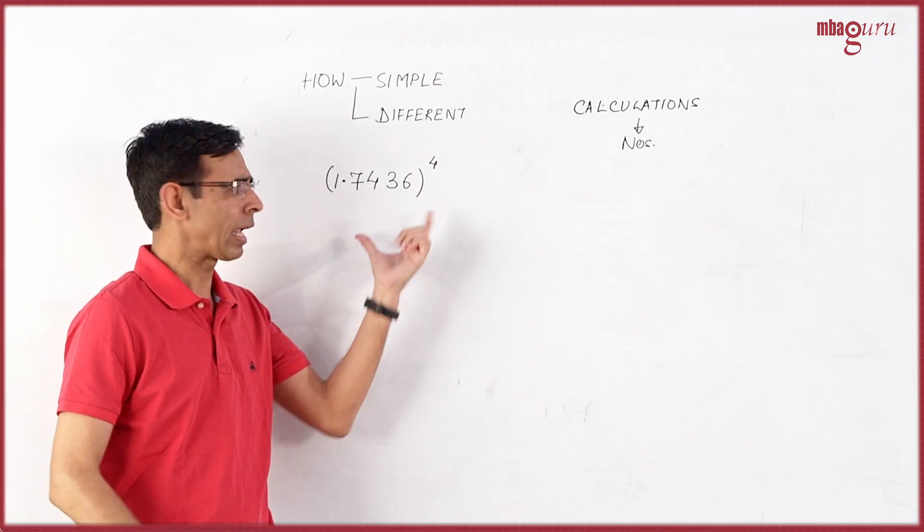Now let's look at an example. So 1.74 whatever, let's say 36 raised to the power 4. And we again need to find an approximate value for this.